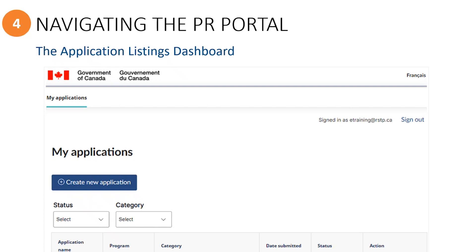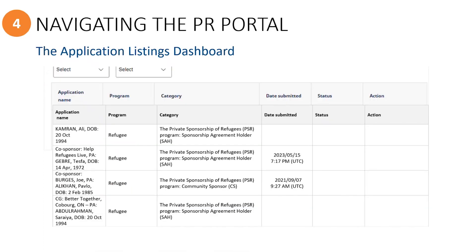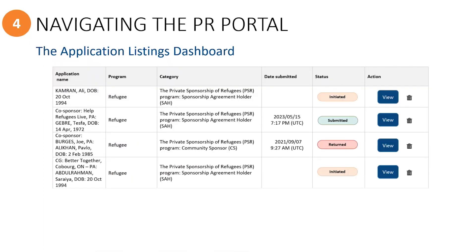The Application Listings Dashboard. When the Application Listings Dashboard opens, you may need to scroll down to see the applications you have been invited to. Applications which are still being filled out will have a yellow status bar showing that it is initiated. To open an initiated application, you will click on the View button.